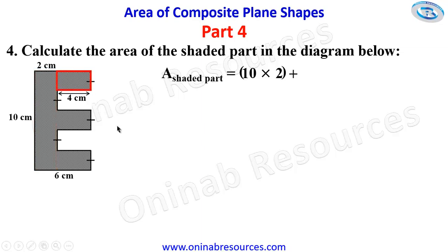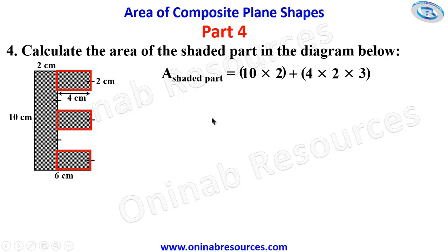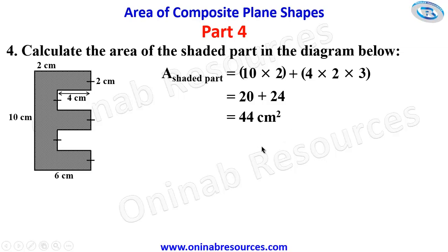The remaining 3 rectangles are similar, so we find the area of one and multiply by 3. This side is 4 centimeters. The whole distance is 10 centimeters divided by 5 equal parts, giving 2 centimeters each. The area of one is 4 times 2, multiplied by 3. Multiplying out: 10 times 2 gives 20; 4 times 2 gives 8, times 3 gives 24. Summing up: 20 plus 24 gives 44 square centimeters, representing the area of the shaded part in the fourth shape.